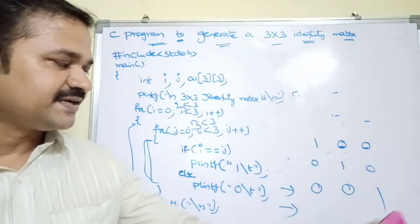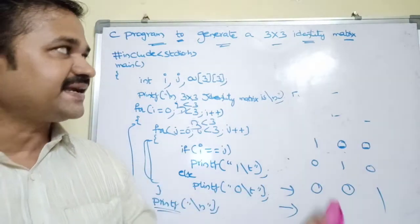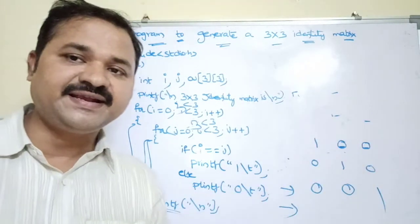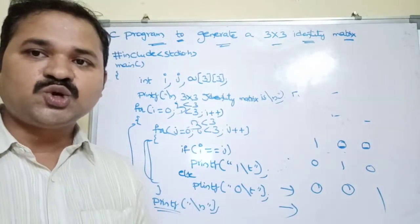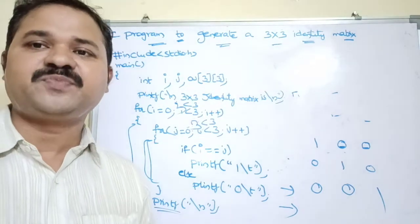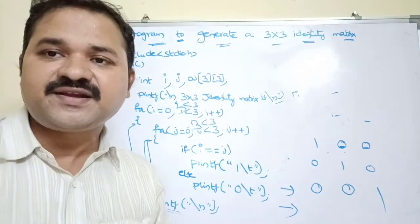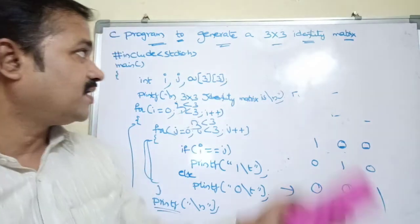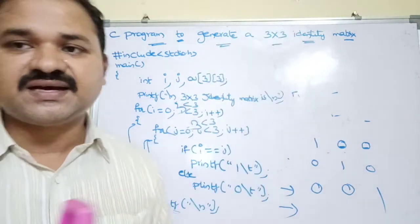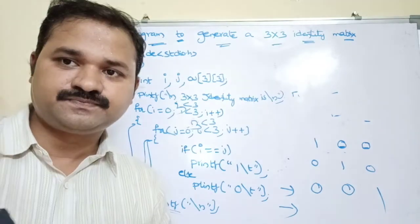The output is a 3 by 3 identity matrix. In this way we can print an identity matrix of dimensions 3 by 3.